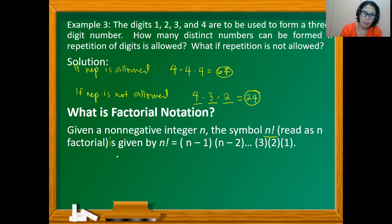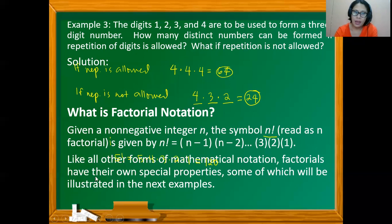So for instance, if we say 5 factorial, this is 5 times 4 times 3 times 2 times 1. So 5 factorial equals, this is 20 times 3, so this is 60 times 2 equals 120. So when we say 5 factorial, this is 120. So like all other forms of mathematical notation, factorials have their own special properties, some of which will be illustrated in our next examples.